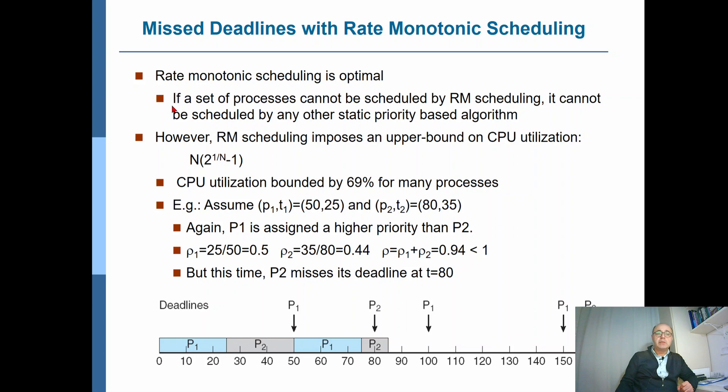However, rate monotonic scheduling also imposes an upper bound on CPU utilization. That means using rate monotonic scheduling, you cannot utilize the CPU above some limit. And that limit is given as N times 2 to the 1 over N minus 1.